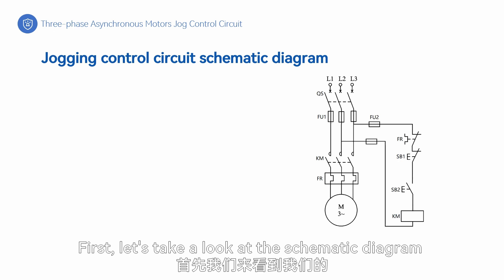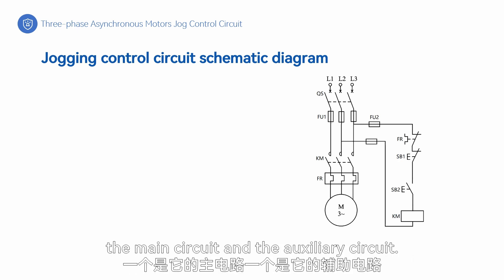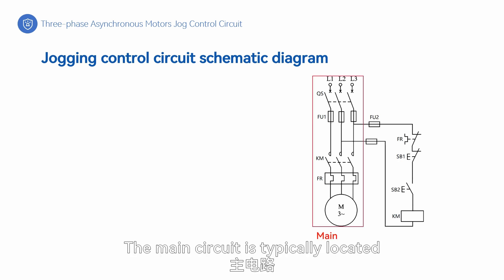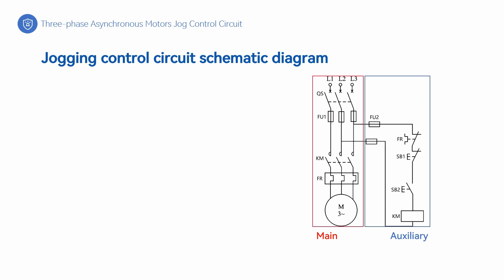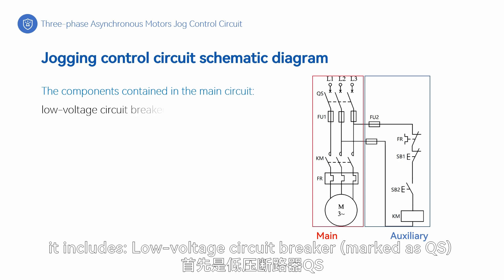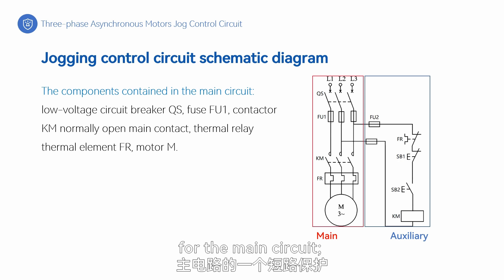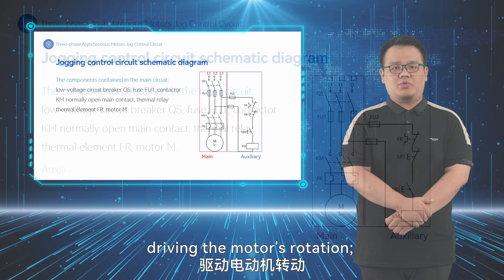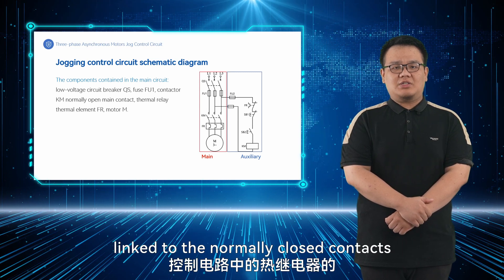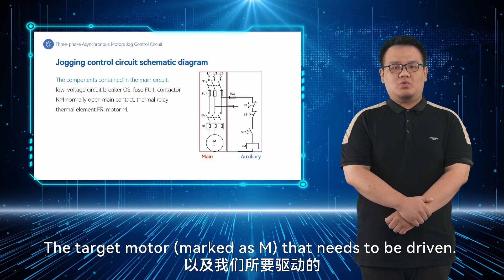Let's take a look at the schematic diagram of our jogging control circuit. A schematic diagram consists of two main parts: the main circuit and the auxiliary circuit. The main circuit is typically located on the left side of the diagram, while the auxiliary circuit is on the right. The main circuit encompasses the part through which the motor's current flows. Starting from the top and moving downwards, it includes: low voltage circuit breaker QS as the main power switch; fuse FU1 for short circuit protection; normally open main contact of contactor KM, which controls the motor's rotation; thermal relay's thermal element FR, providing overload protection; and the target motor M that needs to be driven.